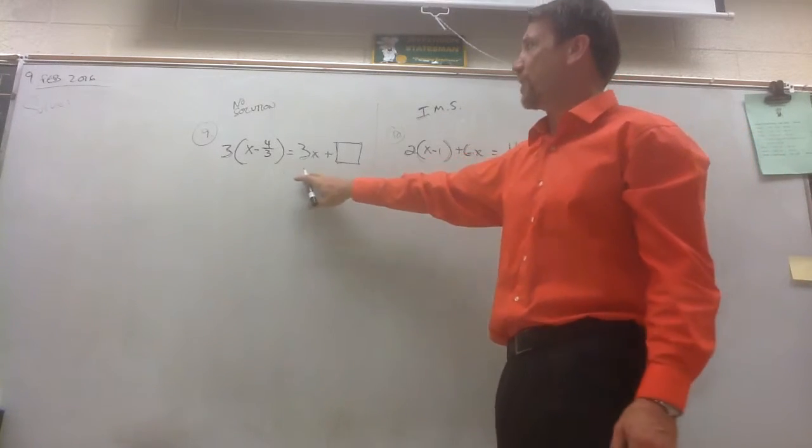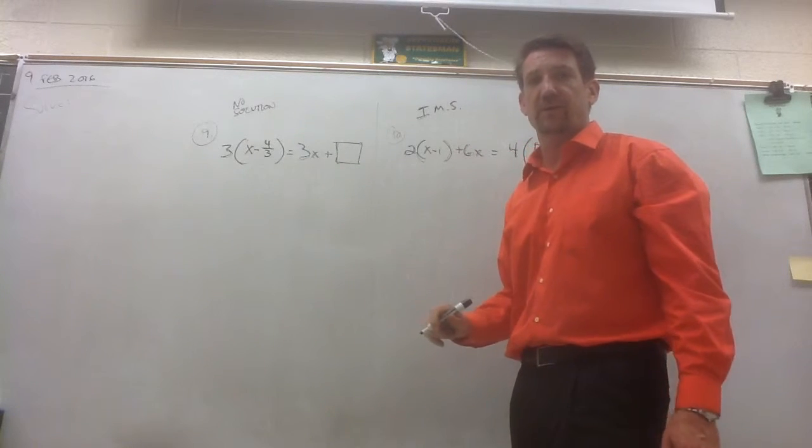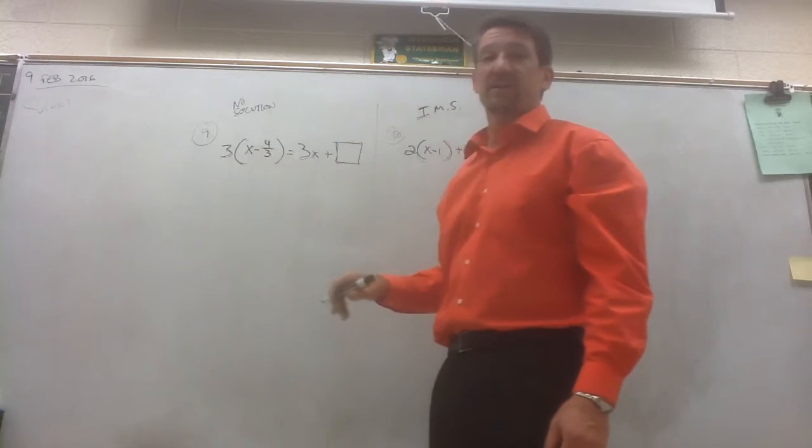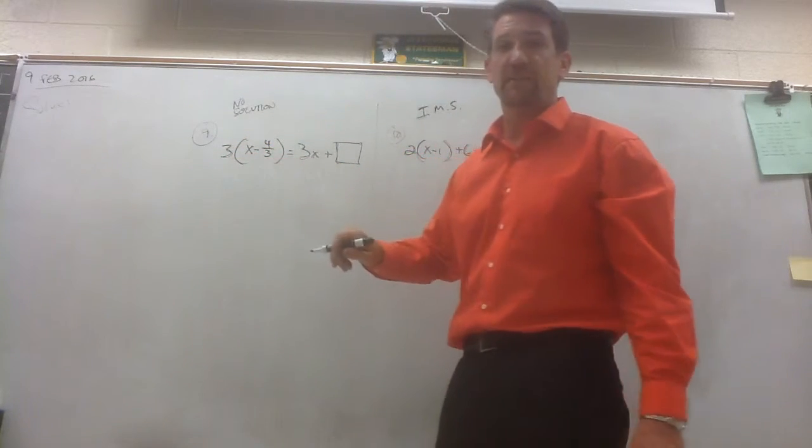So let's take a look at this question number 9. We need to figure out what to put in the box so that this equation would end up with no solution. We're going to start with some distributive property on the left side of this equation. We want to clear these parentheses. Everything gets multiplied by the 3.